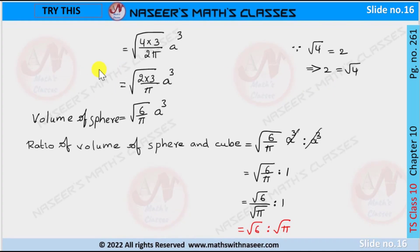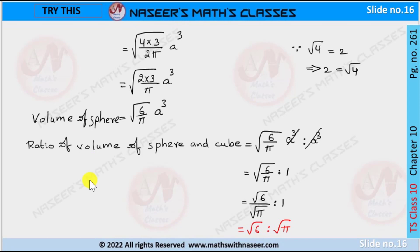To simplify further, we bring the 2 inside the square root, where it becomes 4, giving √(4·3/2π)·a³. Cancelling 2 into 4 leaves 2·3/π = 6/π, so the volume of the sphere simplifies to √(6/π)·a³. The volume of the cube remains a³.